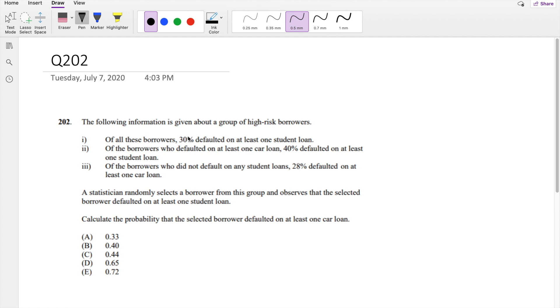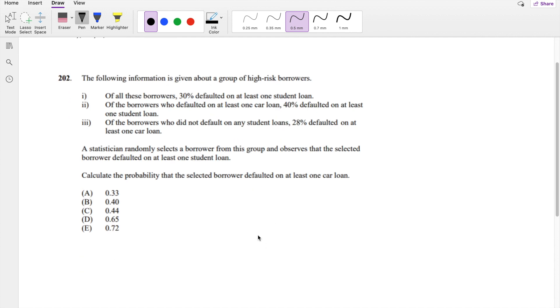The following information is given about a group of high-risk borrowers. Of these borrowers, 30% defaulted on at least one student loan. So this is student loans, car loans, 30% were student loans.